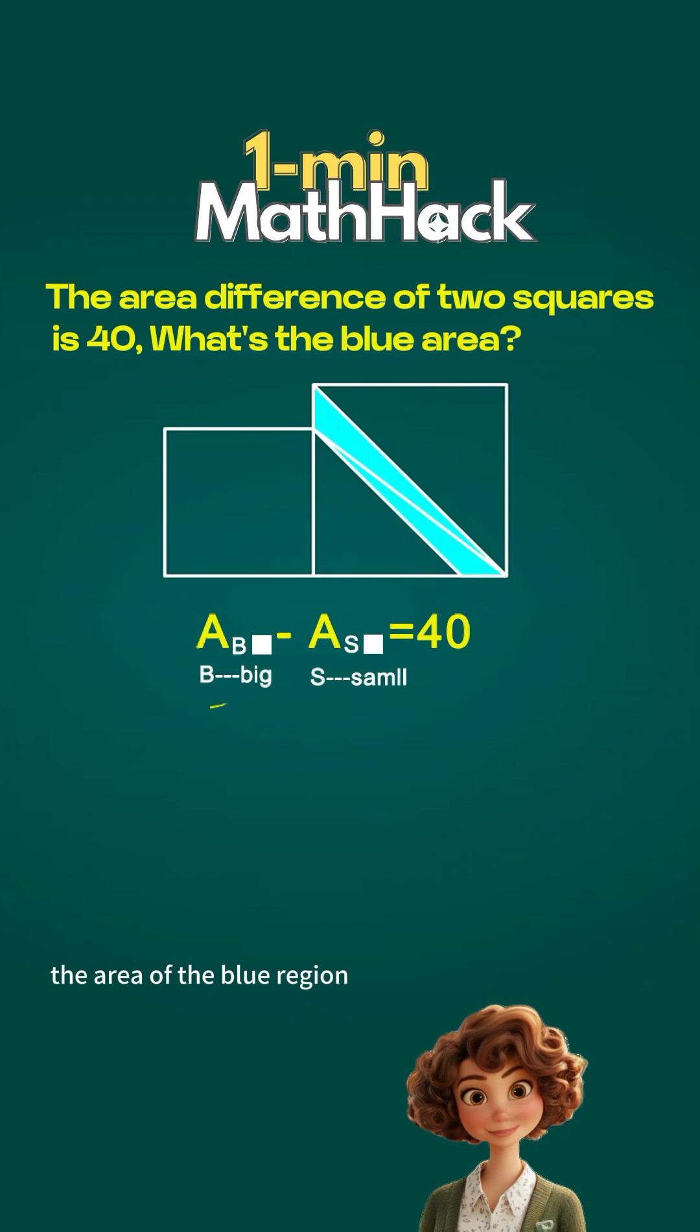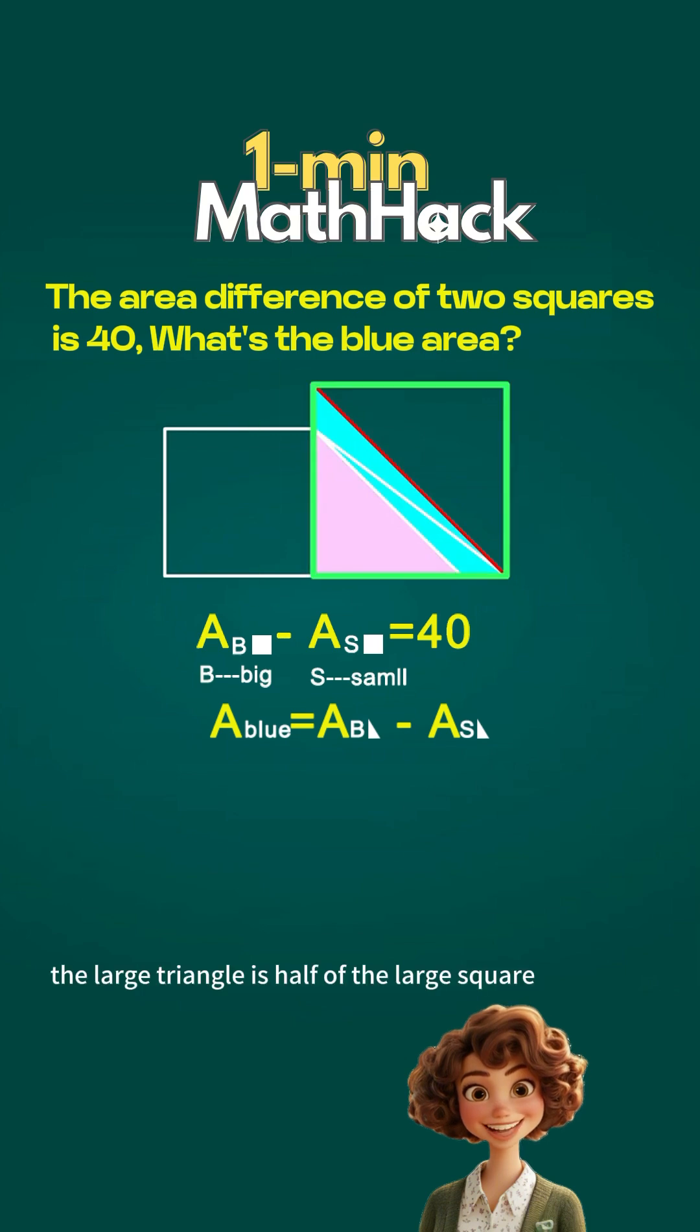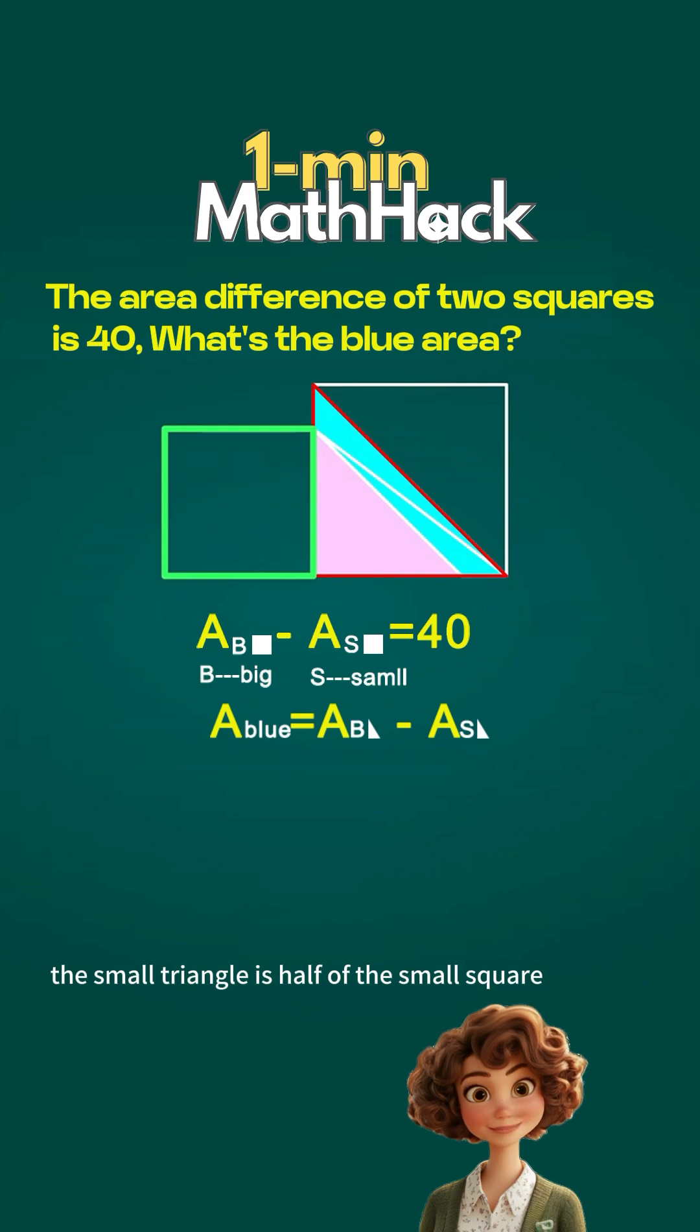The area of the blue region equals the area of the large right triangle minus the small one. The large triangle is half of the large square. The small triangle is half of the small square.